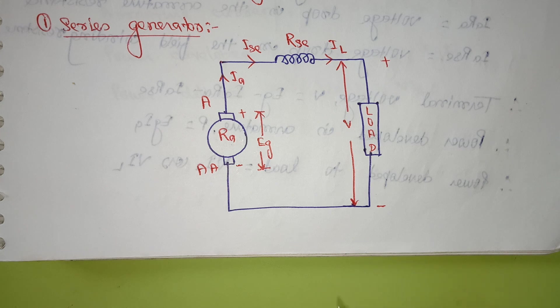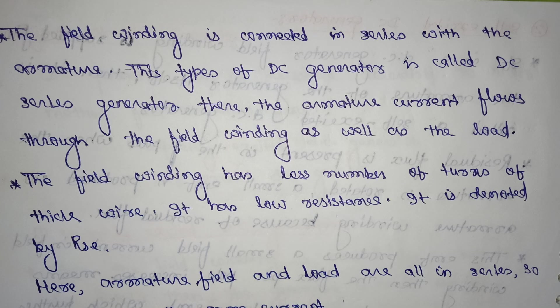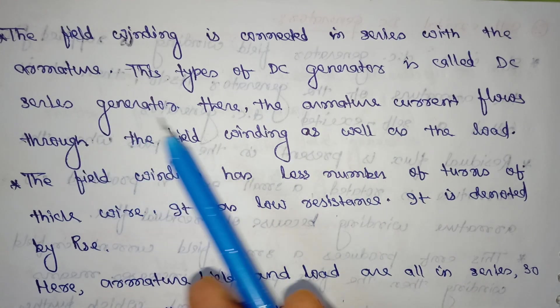The self-excited DC generator, this is one of the type shown here. Next we'll see that the field winding is connected in series with the armature. This type of DC generator is called the DC series generator.